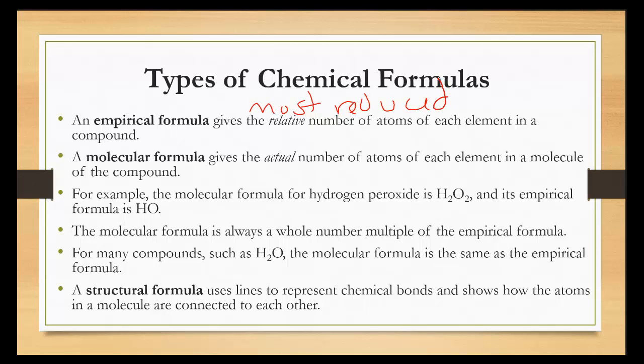For example, the molecular formula of hydrogen peroxide is H2O2. The most reduced form would be the empirical formula, being HO. The molecular formula is always a whole number multiple of the empirical formula. So, in other words, if we take HO and multiply it by 2, that whole number gives us H2O2.